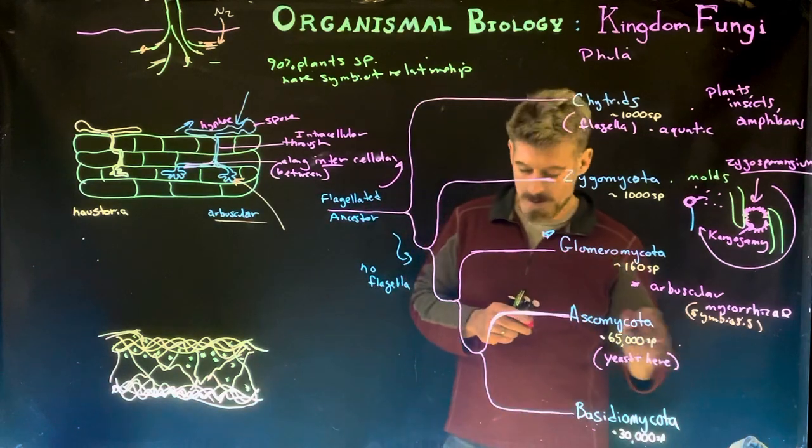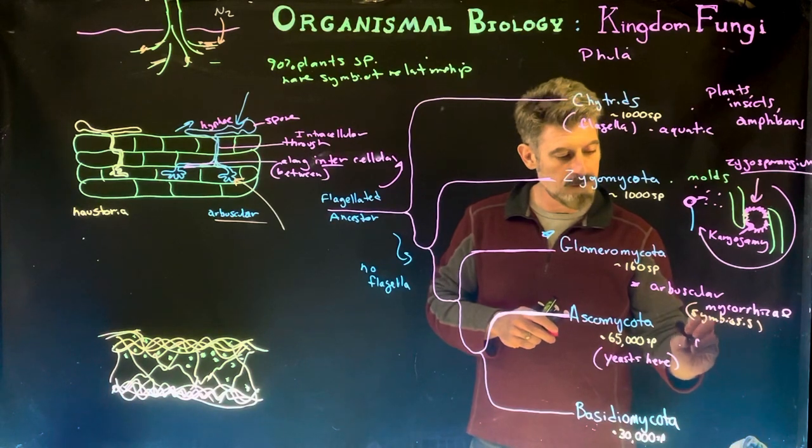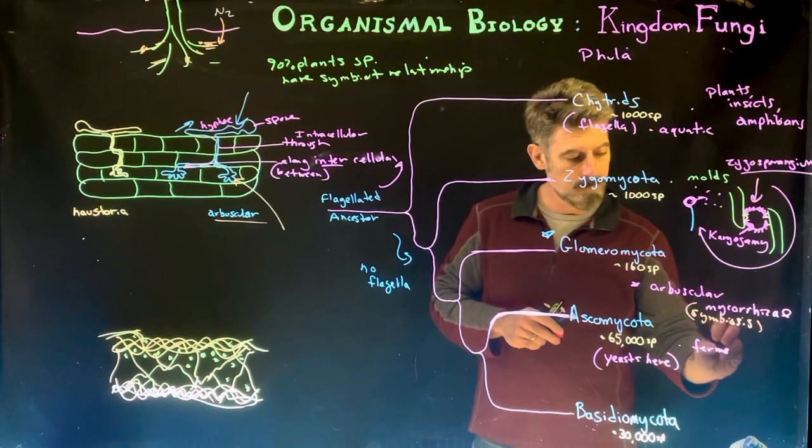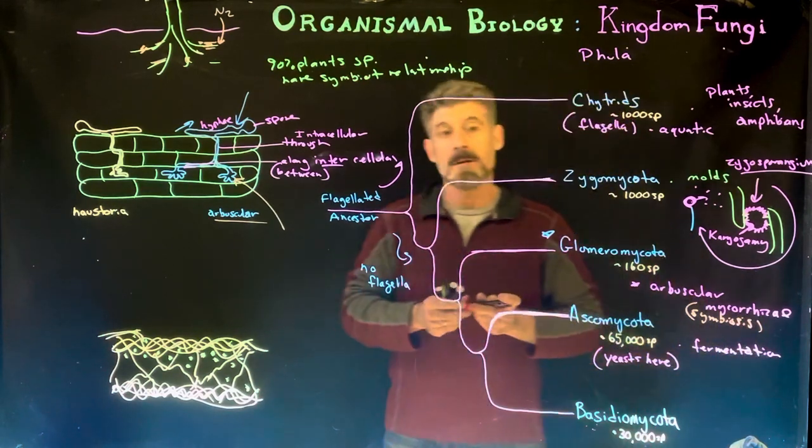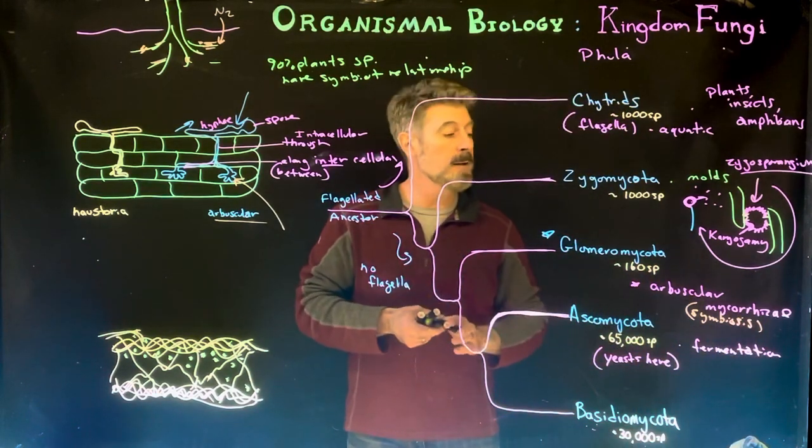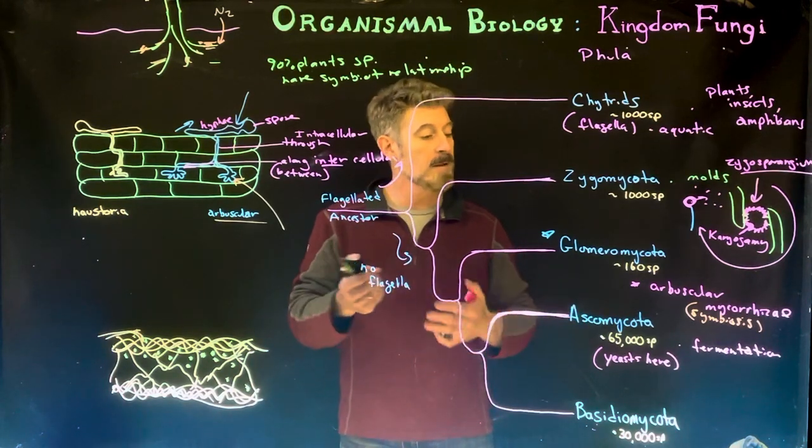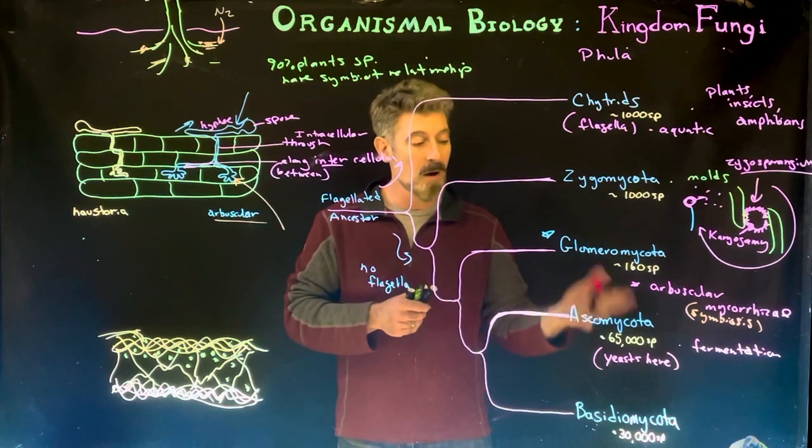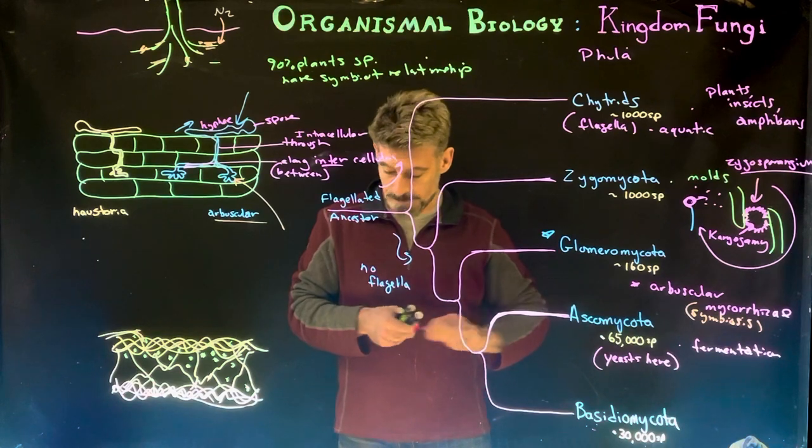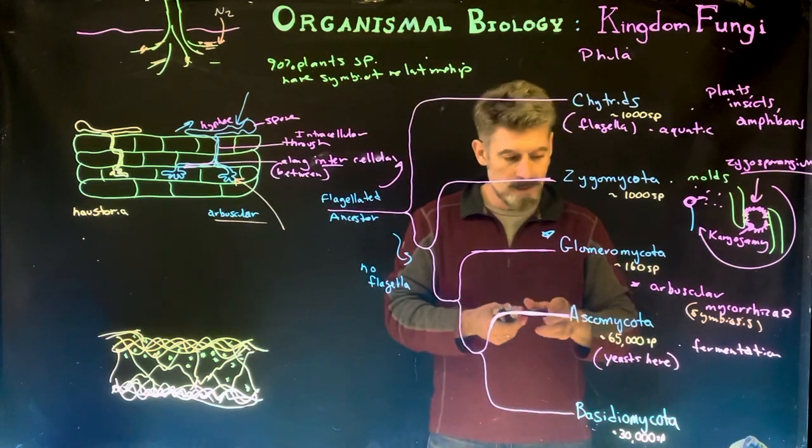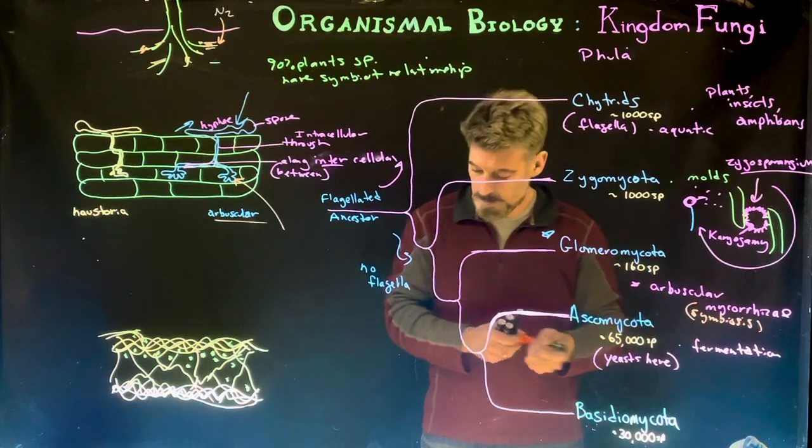The ascomycota has multicellular organisms as well. They are often useful in fermentation that produce products like brewing and baking and a variety of other processes. Some bacteria are used, but a lot of fungi are used in these processes, and it's often fungi from this particular group of ascomycota. What happens here is kind of unique. I'll talk a little bit about the difference that they have from the others in their reproduction.